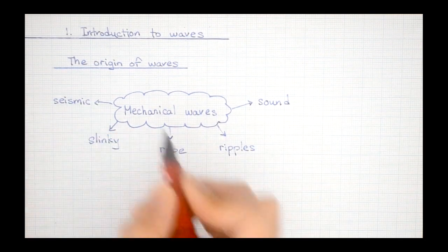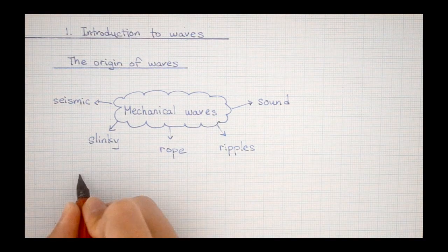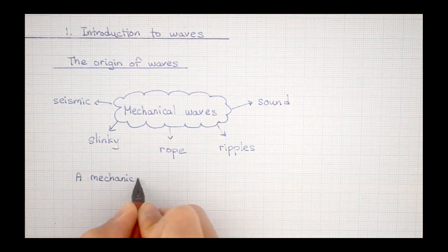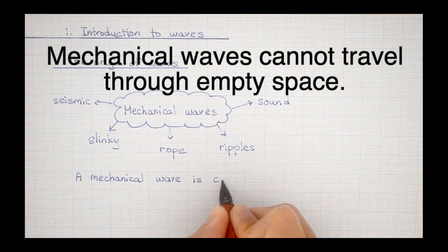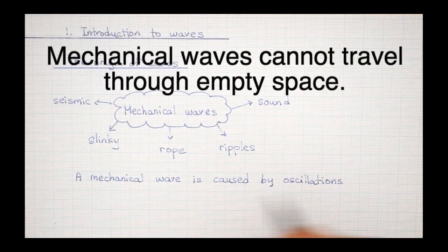A mechanical wave is a wave that is generated from the oscillation of physical particles. You can think of these as tangible waves. They require matter to travel through, and that's why you can't hear sound in a vacuum.